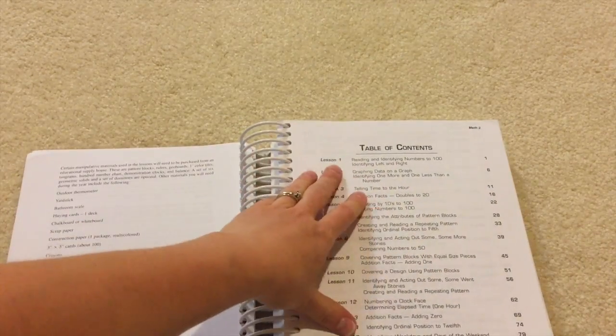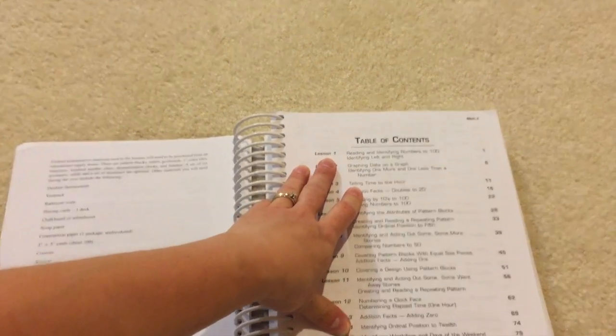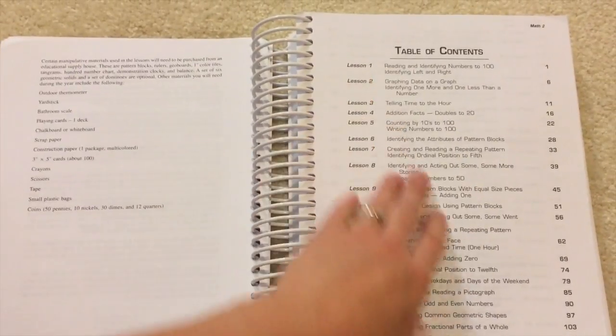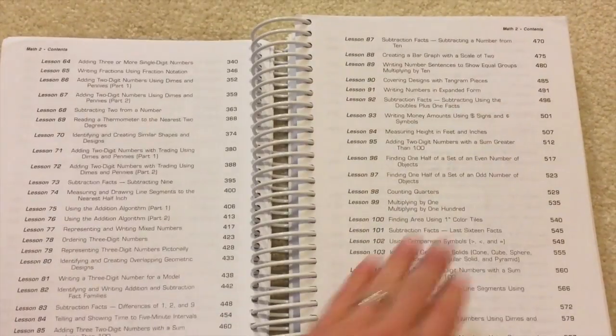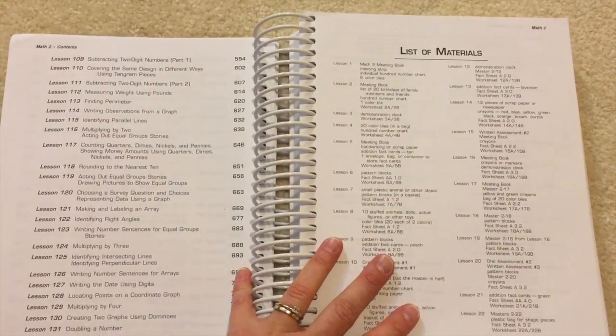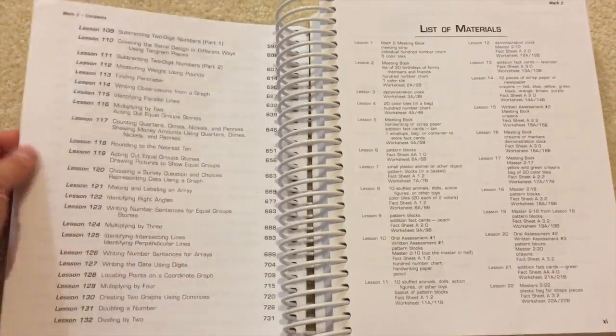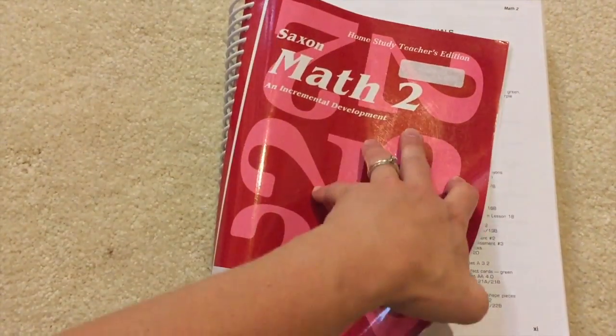In the beginning of this, it will give you the table of contents, which explains to you what each lesson is going to be about. And there are 132 lessons in this particular edition or in this particular level for math two.